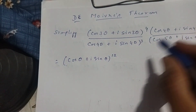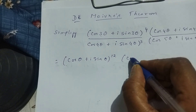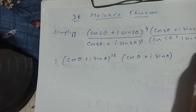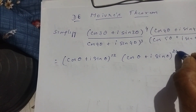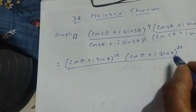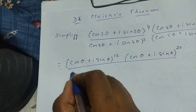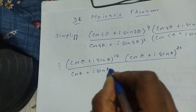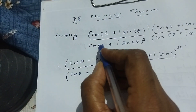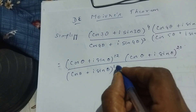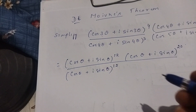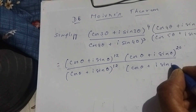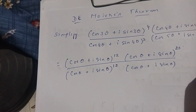Next, 4 fives are 20. You just write cos θ + i sin θ, and here we write 20. Next you write cos θ + i sin θ again — 4 threes are 12, so that 12 we write in the denominator. Then again cos θ + i sin θ, and here it is minus 4.